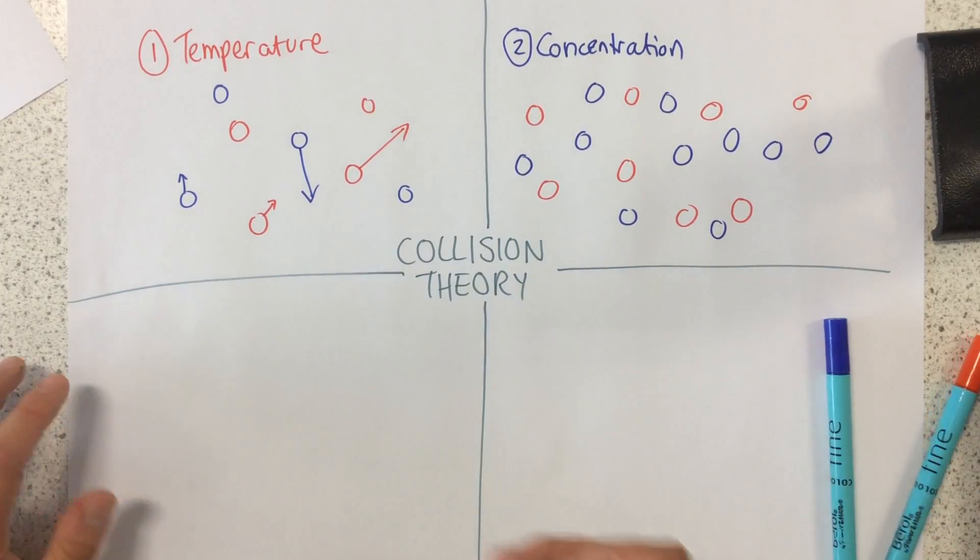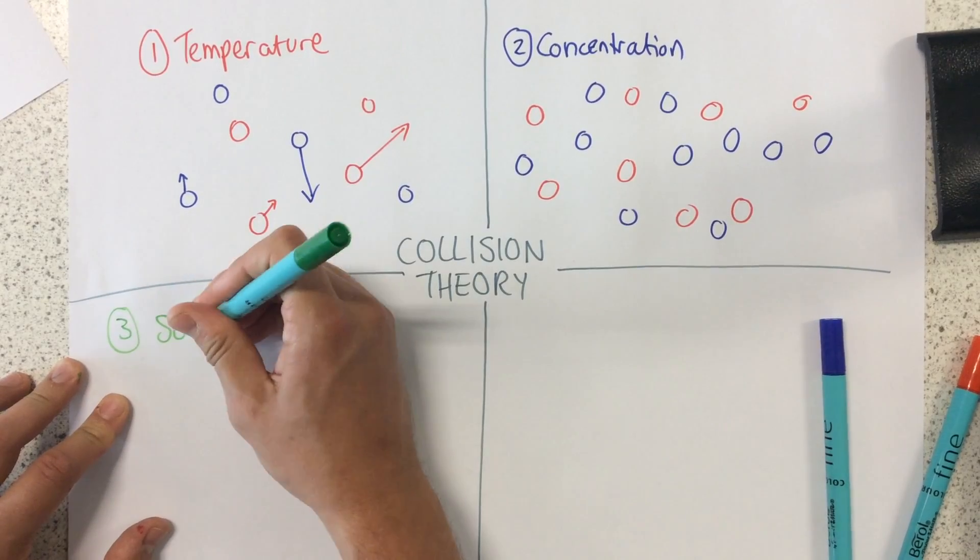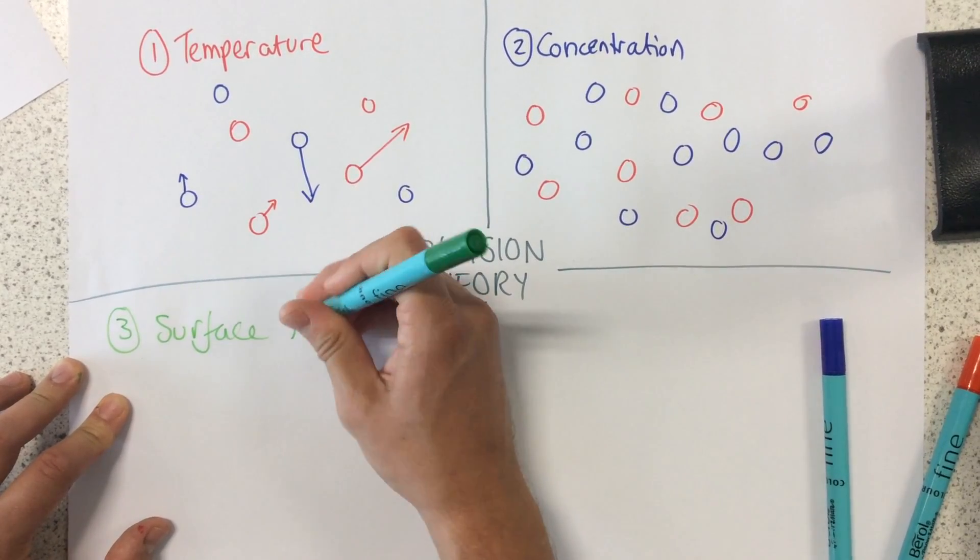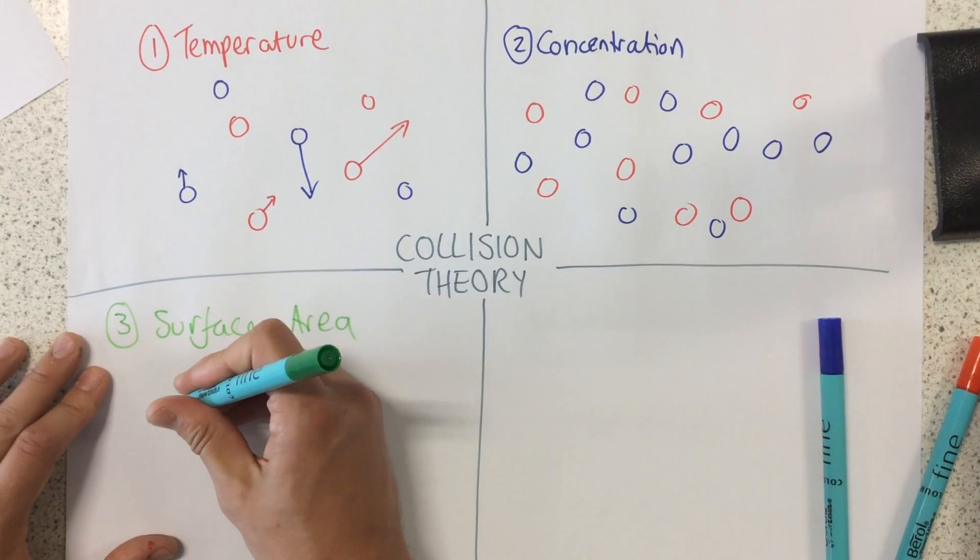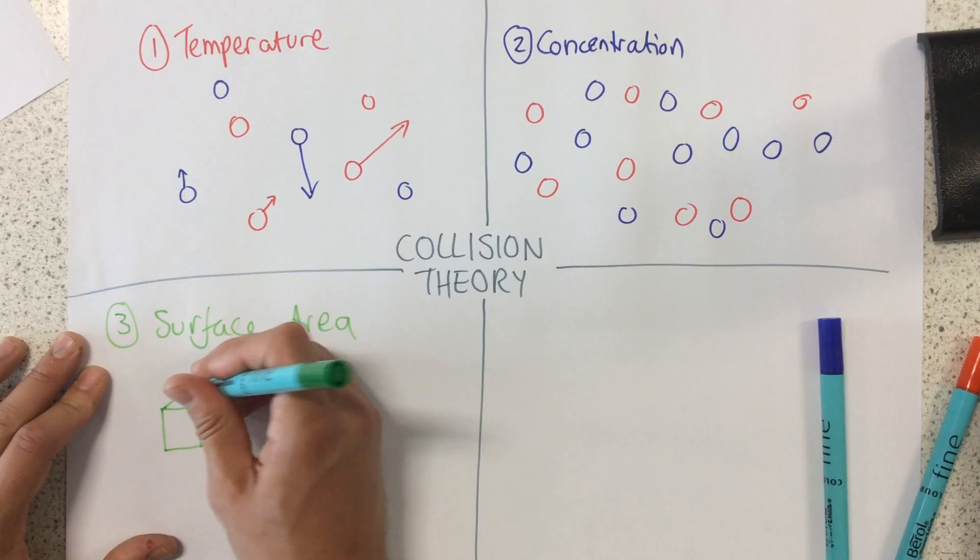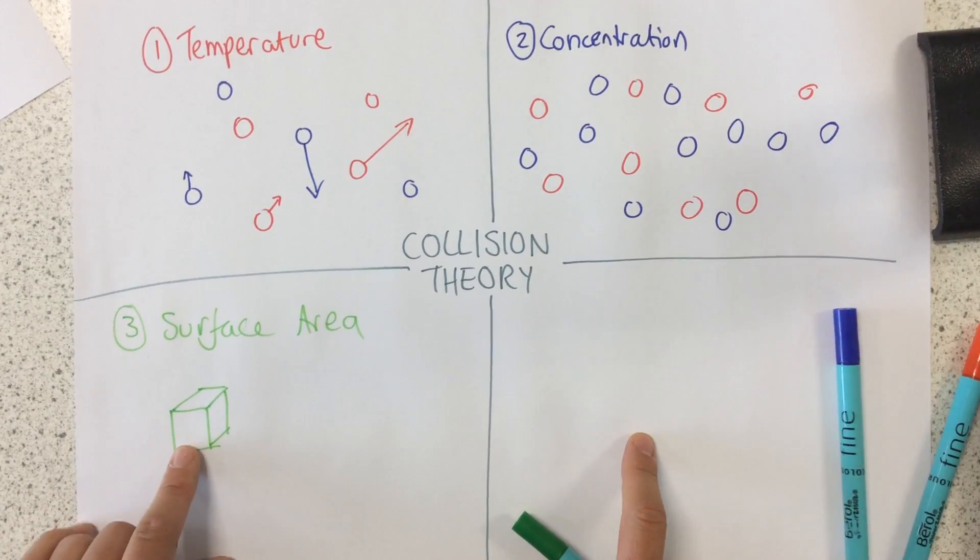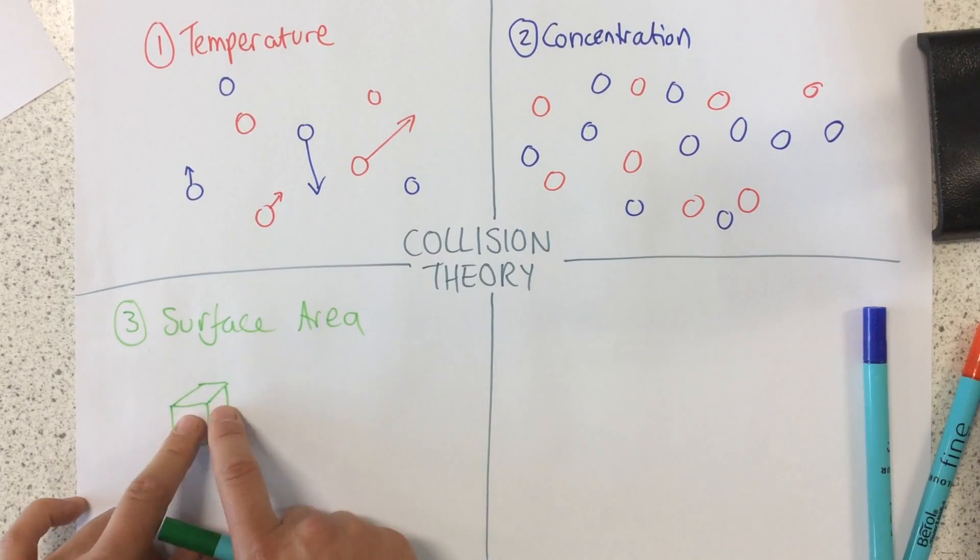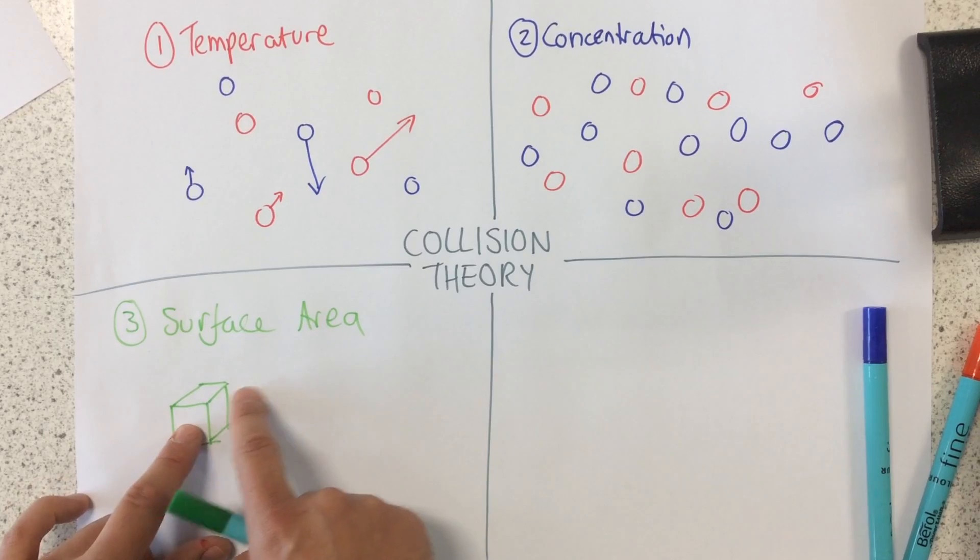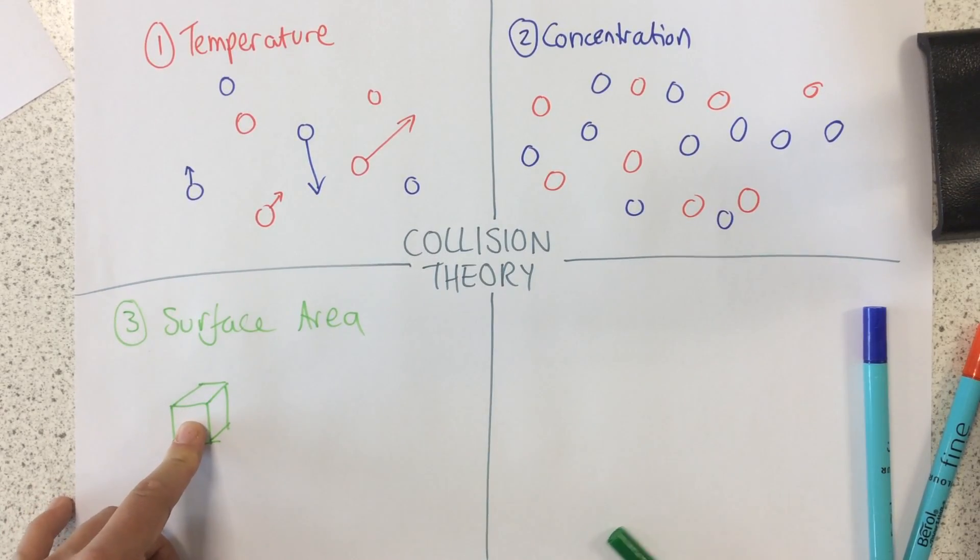Now the third thing we need to know about is surface area. Let's imagine that this is a little block of our reactant. Let's say if we drop this and react it with some acid, we can only react on the external surfaces at any one time. So the surface area limits the rate of reaction.